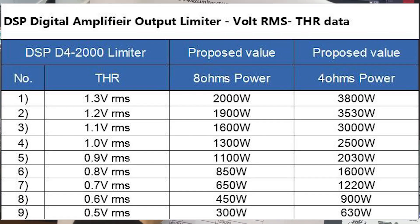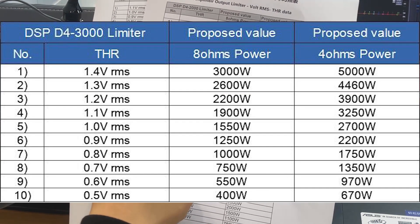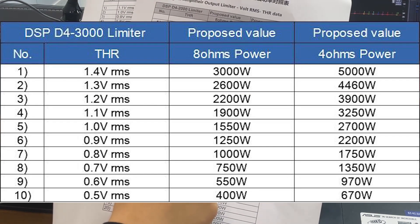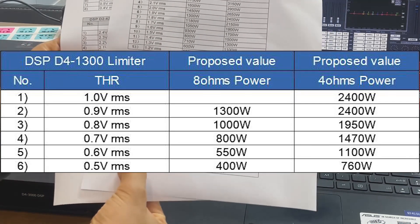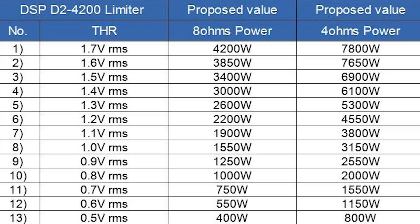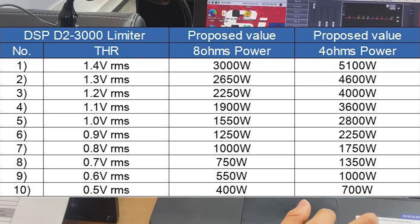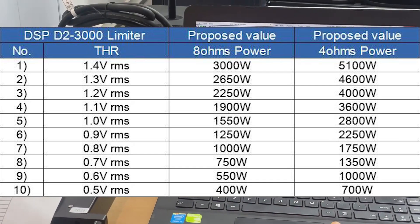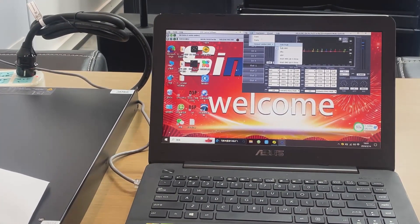For example, for the D4-3000 DSP, if the THR is 2.4 volts, the power is at maximum on each channel. If you adjust the THR to 0.5 volts, the power is more than 450 watts. So the important thing is to adjust the THR using this software.